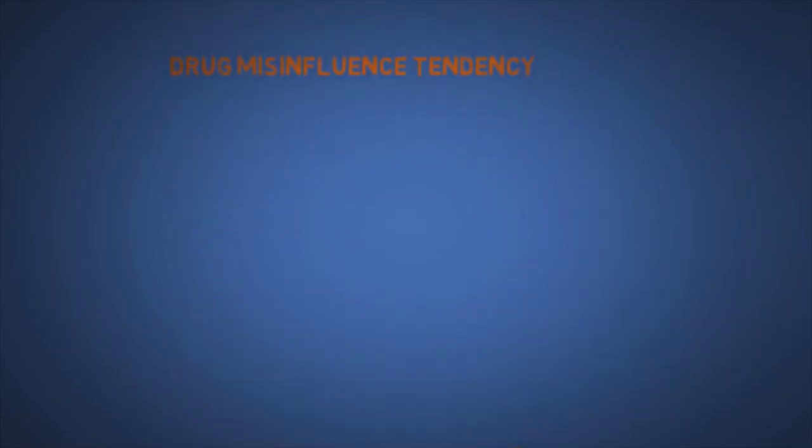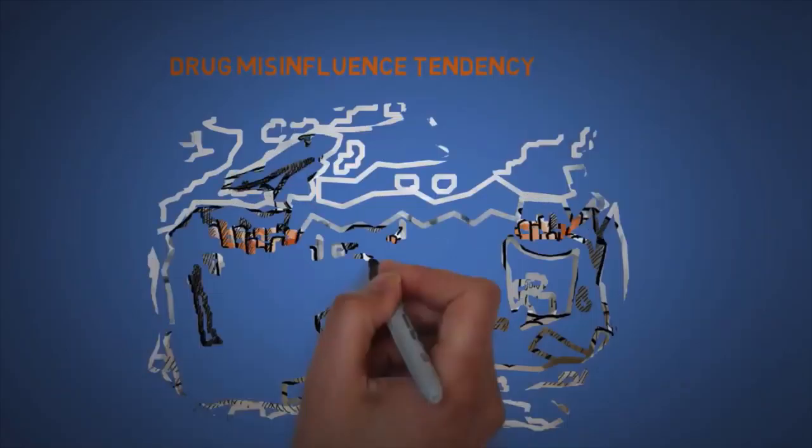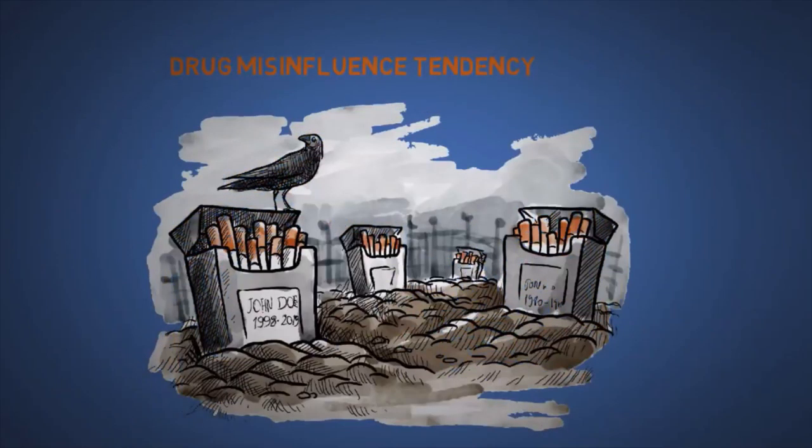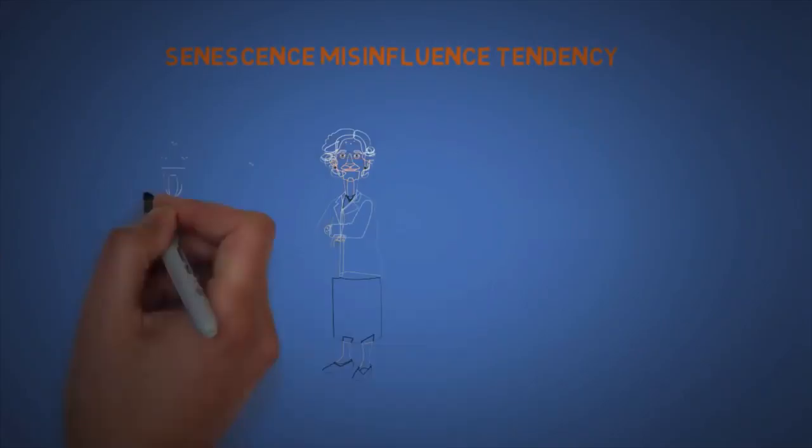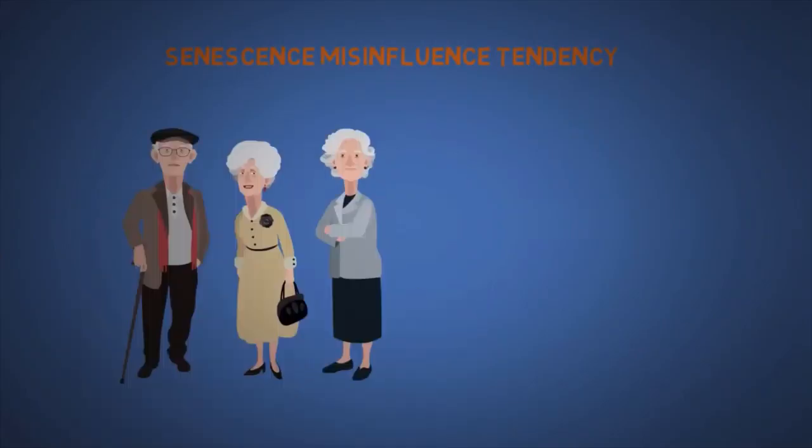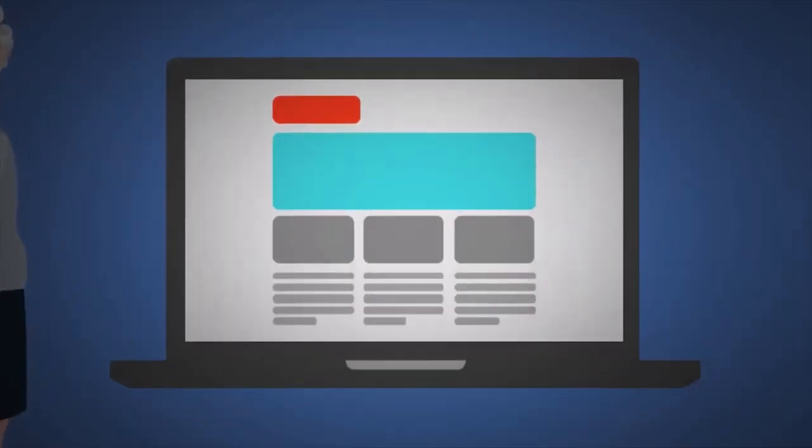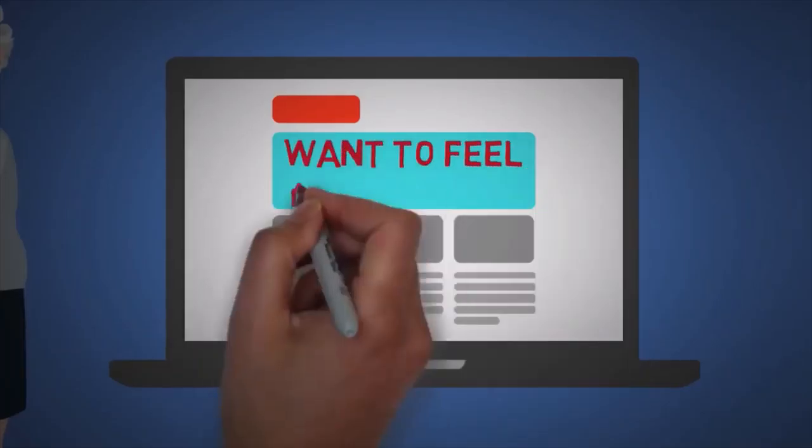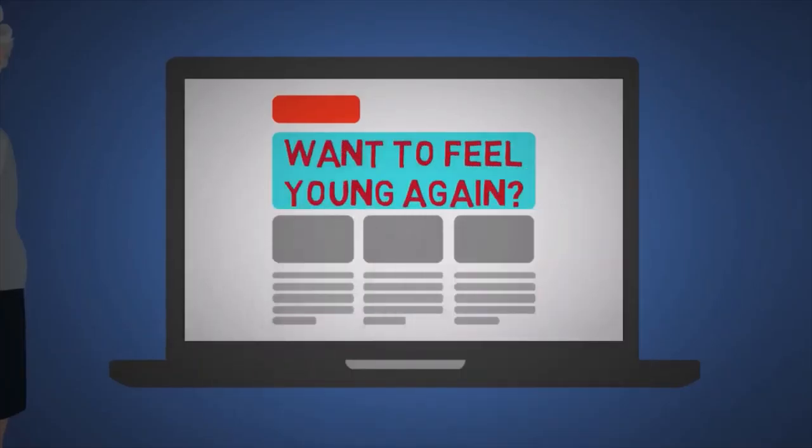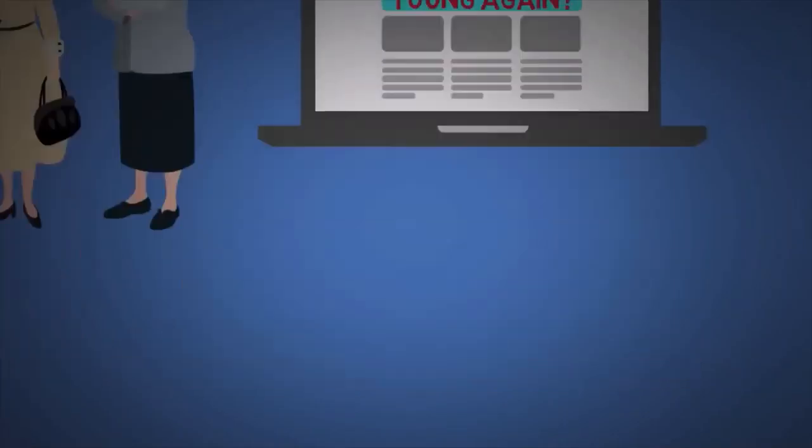The twentieth is the drug misinfluence tendency. This is a very strong tendency that costs lives. It is often supplemented by simple pain avoidance psychological denial. The twenty-first is senescence misinfluence tendency. As we age, there is a natural loss of certain skills and abilities. So if you got a website targeted for older people, make sure the fonts are big. Try to speak slower and enunciate your words more.